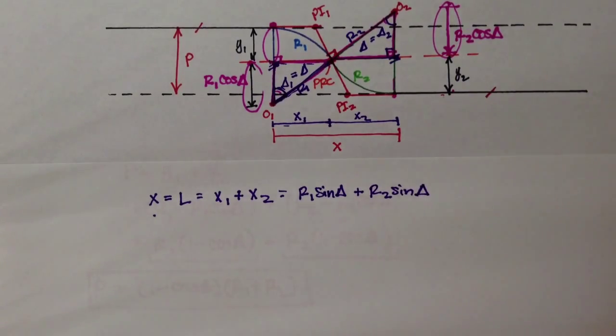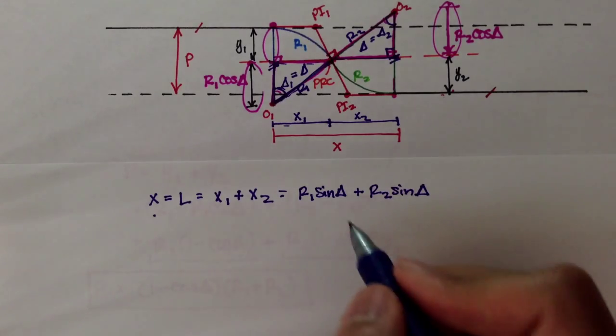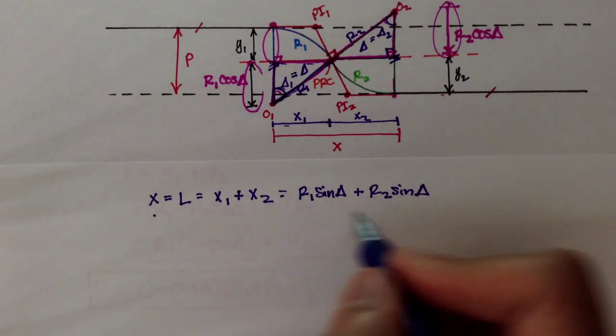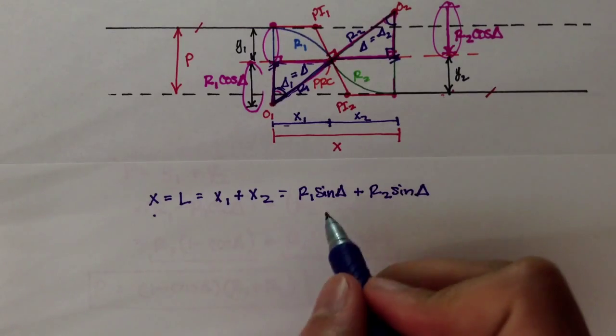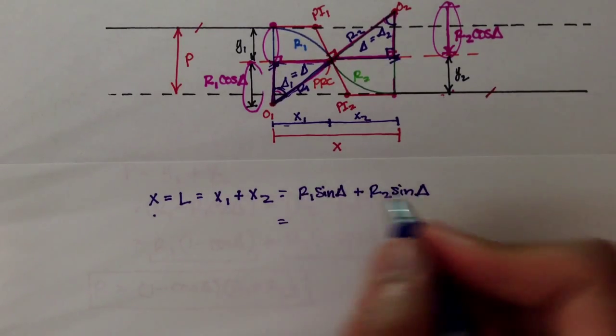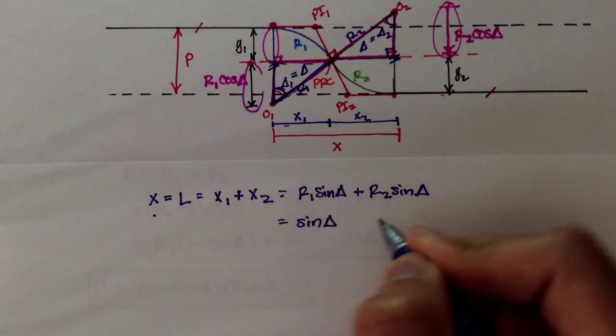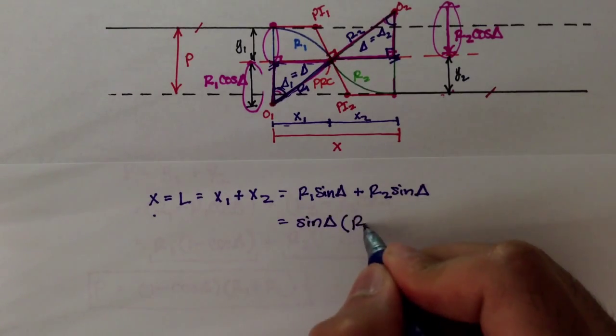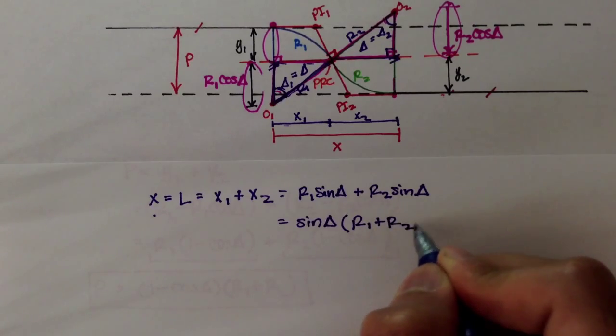Now, we can simplify this a little bit more, we can actually take out the sine theta. Or, sine delta, I'm sorry, I keep getting delta and theta confused, we can take those two, we can factor those out, and we'll get sine delta is equal to R1 plus R2.